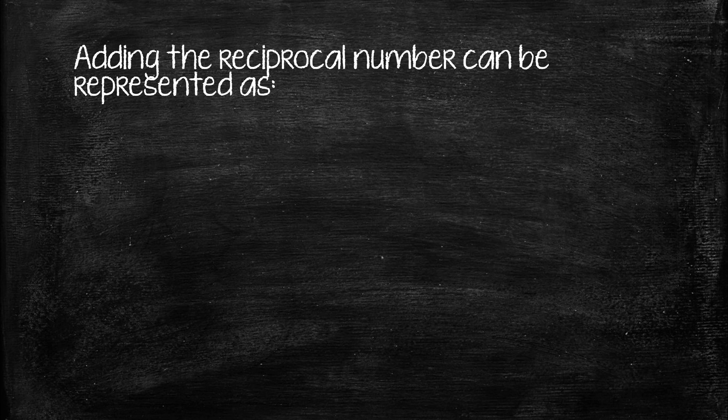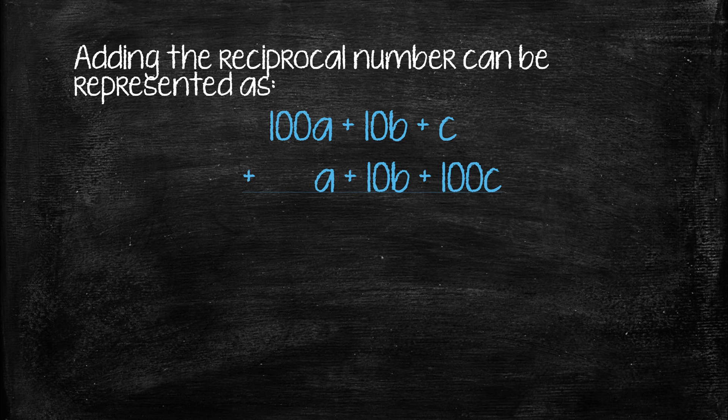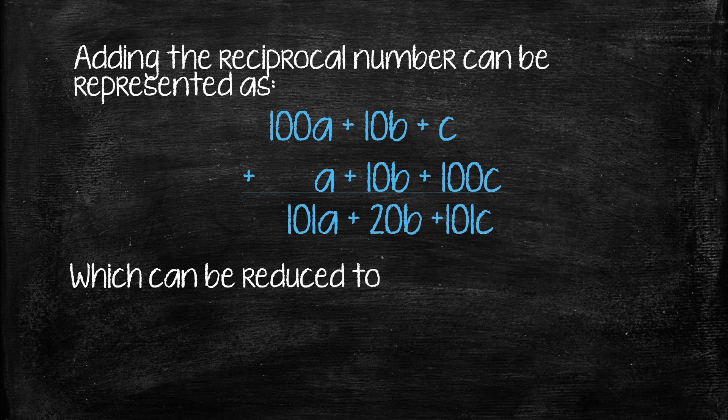Adding the reciprocal number could have been represented as 100A plus 10B plus C plus A plus 10B plus 100C, which gives us 101A plus 20B plus 101C, which can be reduced to 101 times the quantity A plus C plus 20B.